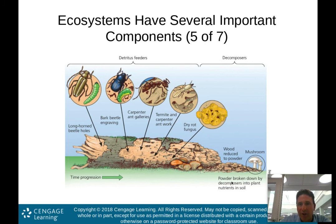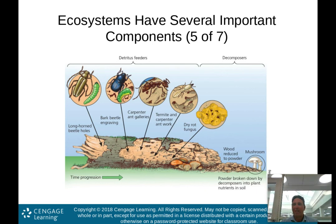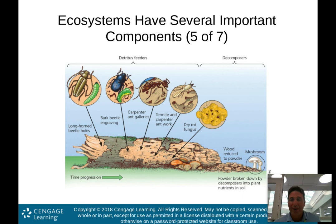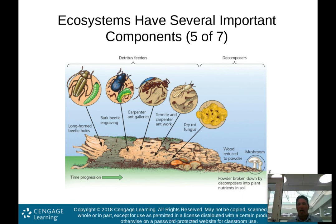Eventually the wood is reduced to powder, and that powder is broken down by decomposers like mushrooms and fungi into plant nutrients in the soil. This is what we call nutrient cycling — you need these organisms.